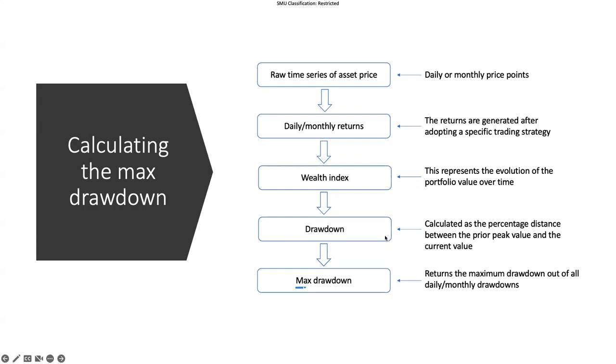Based on the wealth index, we can calculate the daily drawdown or monthly drawdown. This is a single period drawdown and it is calculated as the percentage difference, the percentage gap between the previous peak value and the current value. Based on these single period drawdowns we can extract the max drawdown, which is the worst case drawdown.